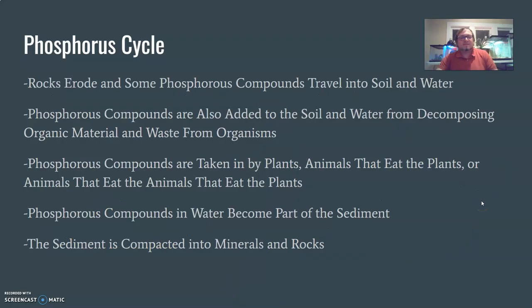To go over all the pieces again: rocks erode and phosphorus compounds travel into soil and water; phosphorus compounds are also added from decomposing organic material and waste; phosphorus compounds are taken in by plants, animals that eat the plants, or animals that eat the animals that eat the plants; and phosphorus compounds in water become part of the sediment, which is then compacted into minerals and rocks.